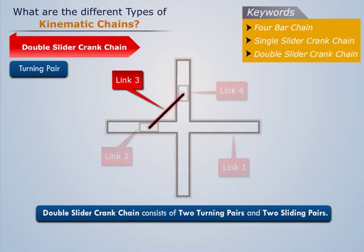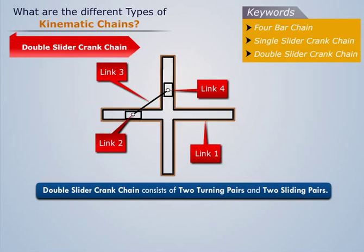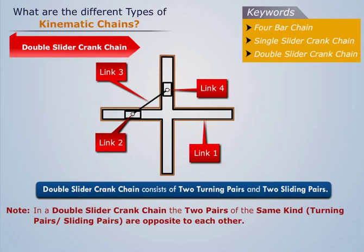And link 3 makes a turning pair with link 2 and link 4. Note that in a double slider crank chain, the two pairs of the same kind are opposite to each other.